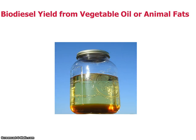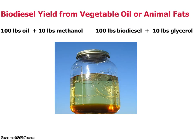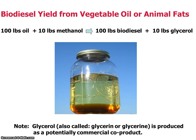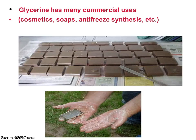This is a nice picture of how the glycerol will settle out of the biodiesel — the glycerol is at the bottom and the biodiesel is on top. As mentioned earlier, 100 pounds of oil plus 10 pounds of methanol gives us 100 pounds of biodiesel plus 10 pounds of glycerol. Glycerol — also called glycerin or glycerine — is produced as a commercial co-product that can be used in soaps, cosmetics, antifreezes, etc.